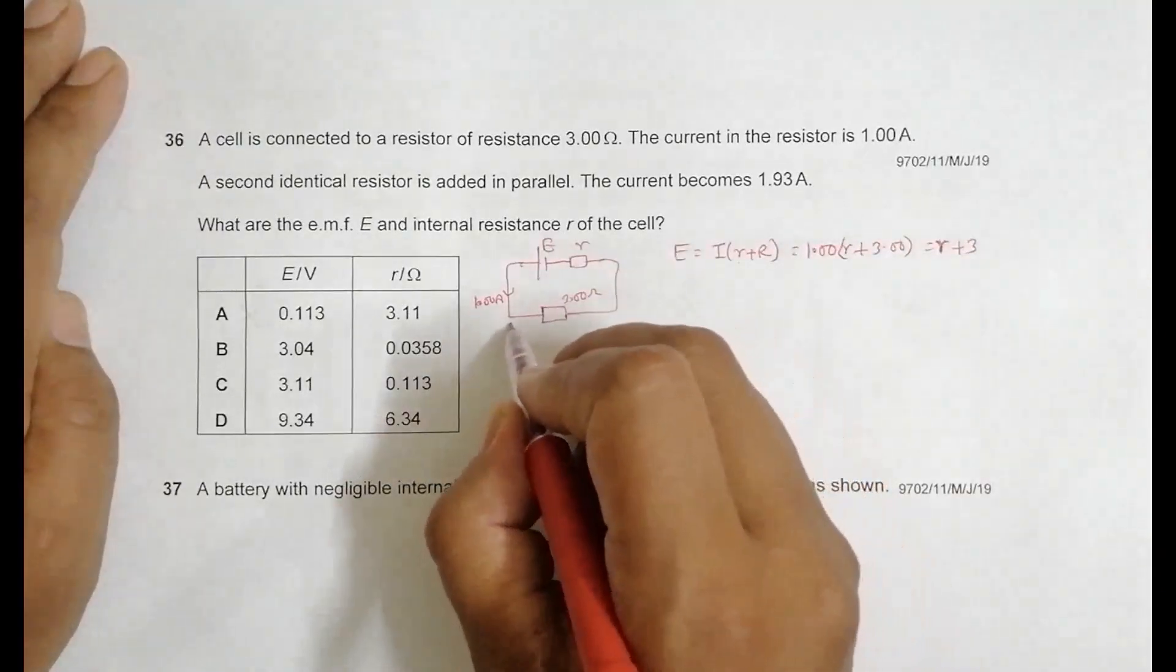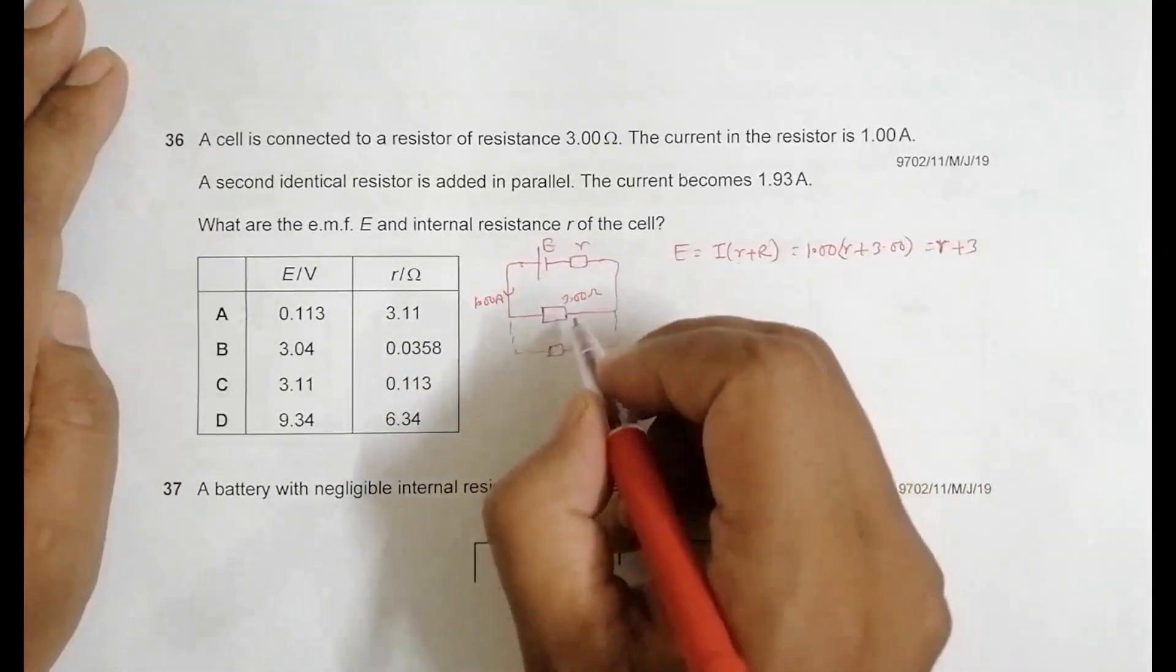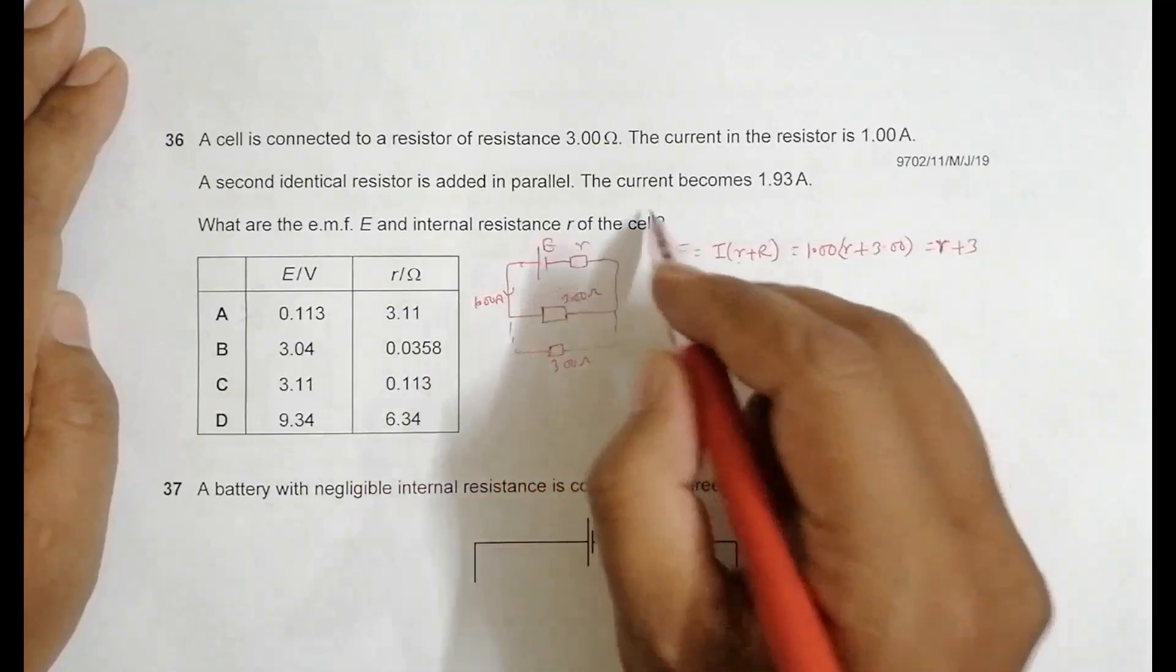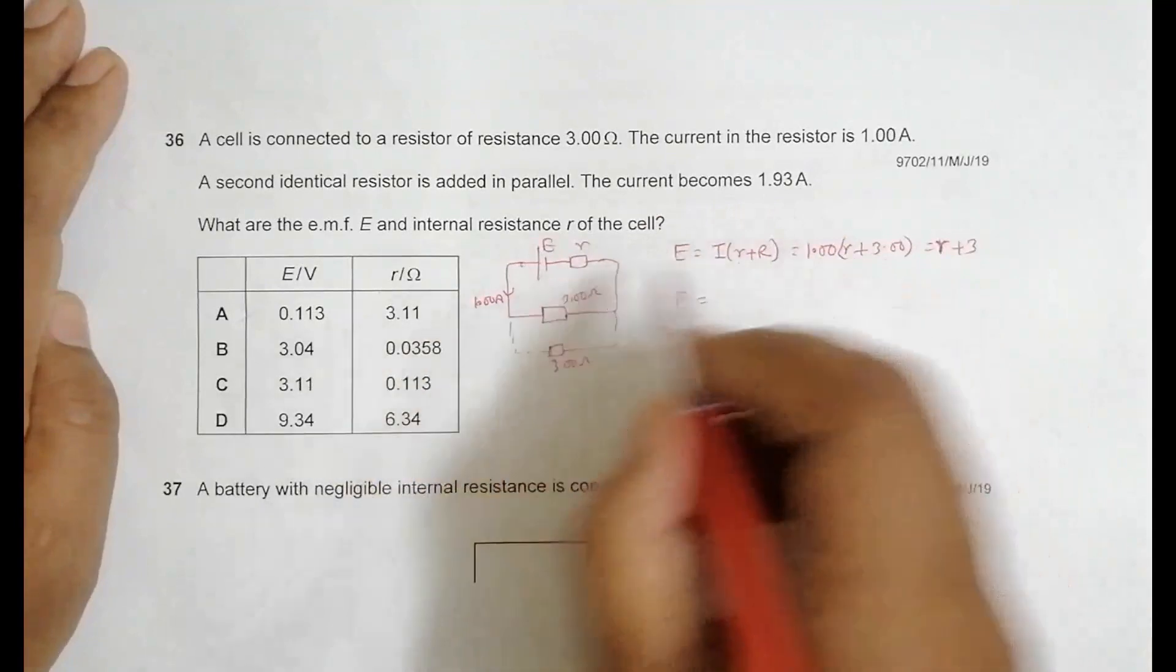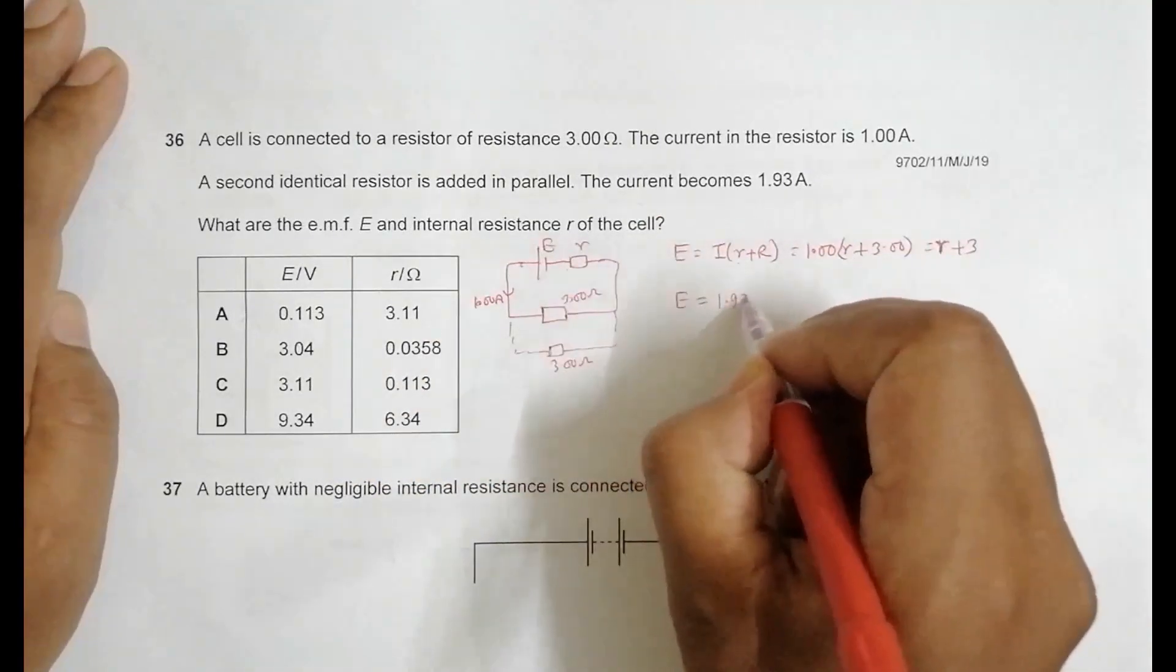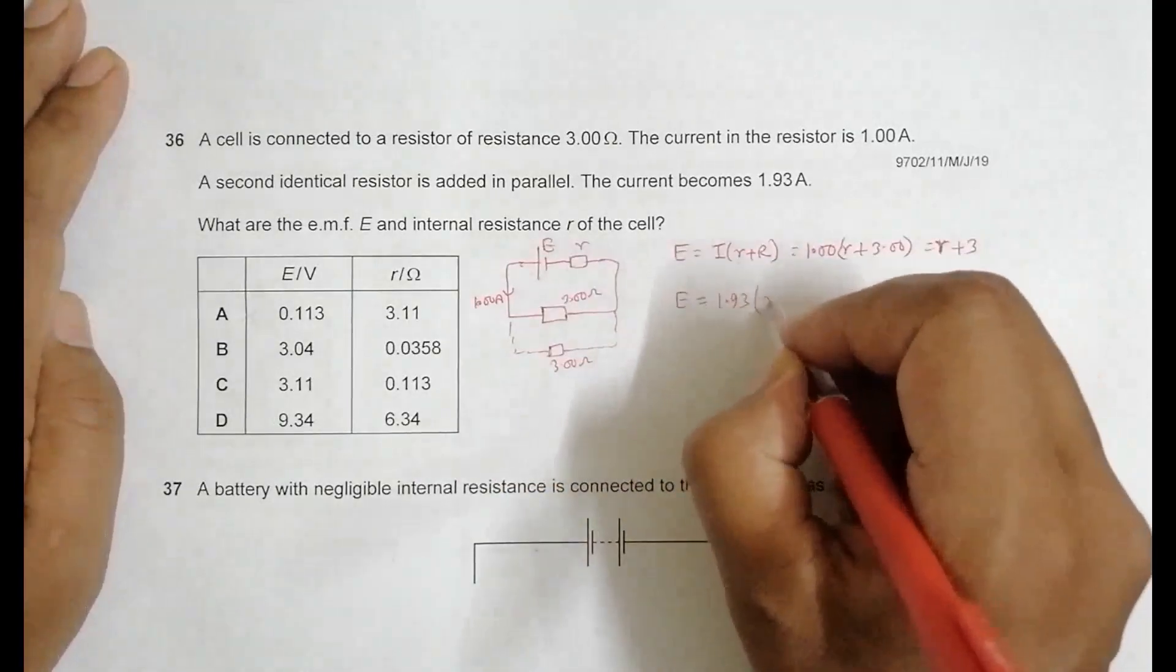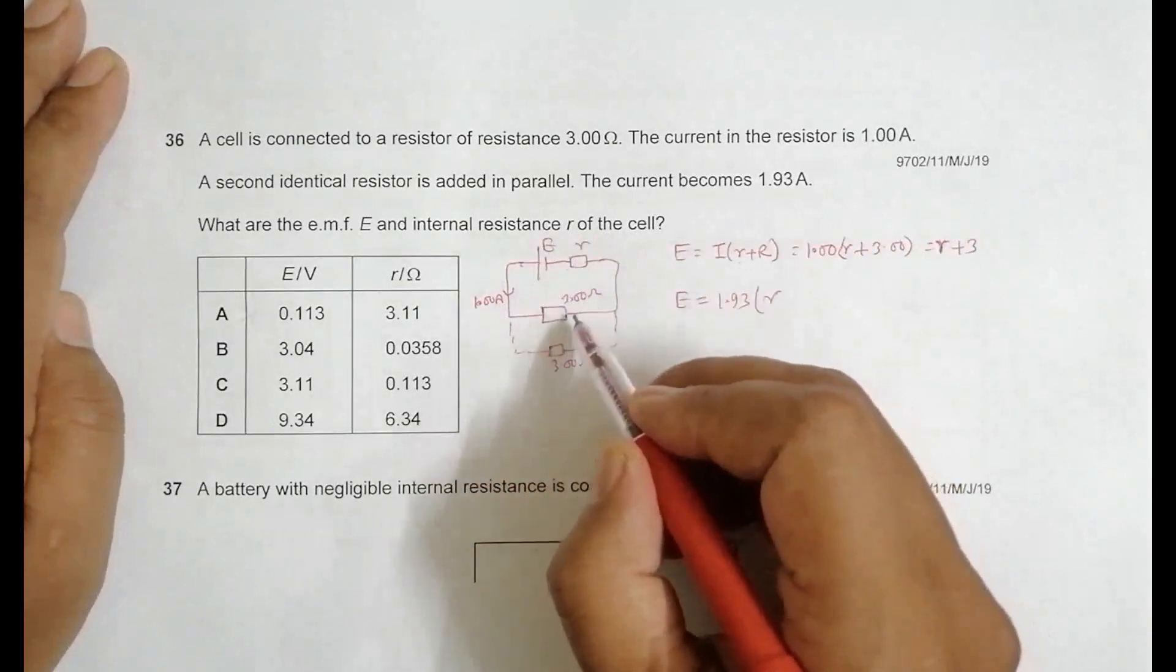Now when I connected the second resistor here, which is identical and equal, means it's also 3.00 ohm, the current becomes 1.93. So now what happens is E is equal to the new current, 1.93, then I have r.